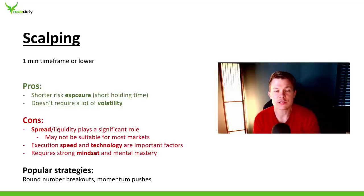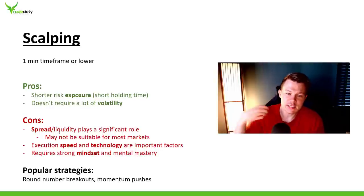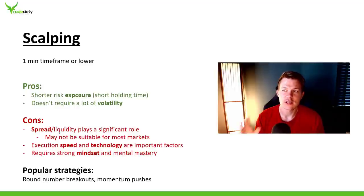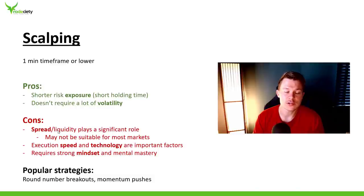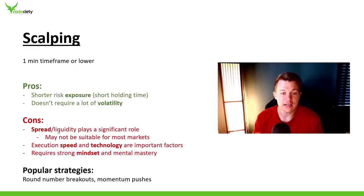Also, execution speed and technology are very, very important factors in a scalping strategy. It's so important that you get the right price — that when you click the mouse, you're instantly in a trade. Technology, broker, speed, internet connection: all of those things are very important. As a retail trader, you need to invest not just in physical equipment, but also shop for a good broker and a good platform, and really test the speed and uptime.